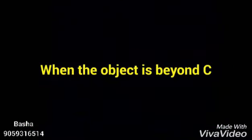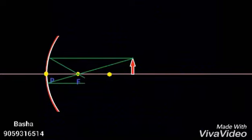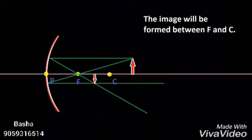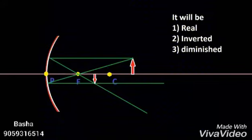Case 3: When the object is beyond C, two rays are selected — one parallel to the principal axis and another passing through the focus. The intersecting point will be the position of the image. The image will be real, inverted, and diminished.